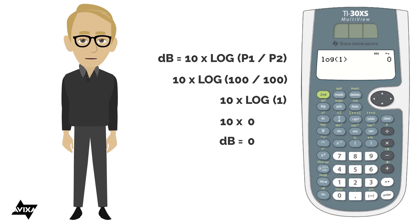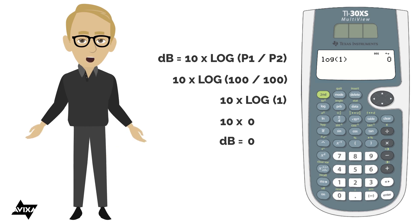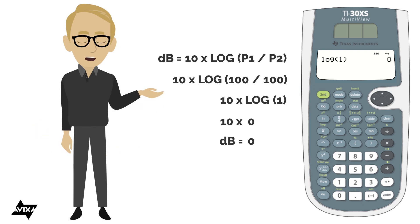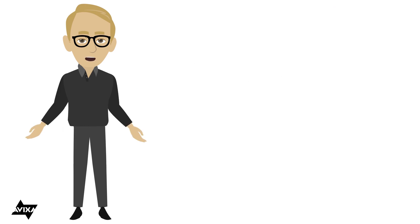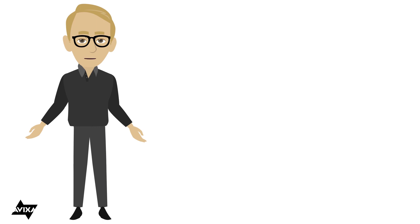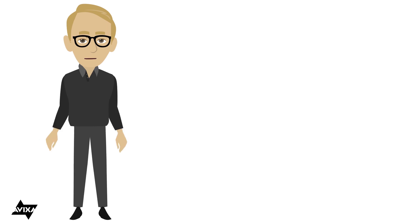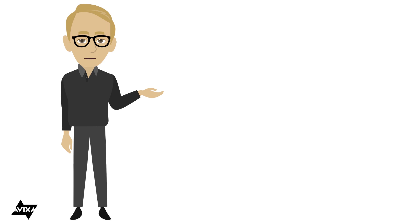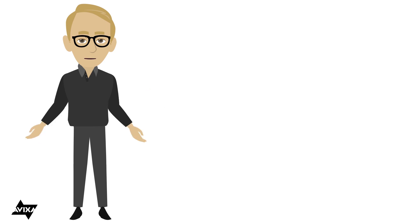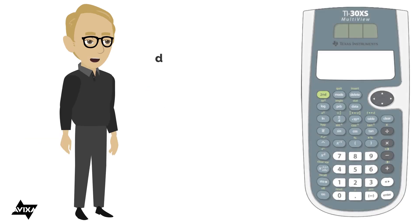And we would expect that — there's no change, same thing in, same thing out. Let's try a different example. Let's say I go from 100 watts to 200 watts — I've doubled the power. If I have an increase, I expect gain, a positive number. So I would put the larger number first. Let's see what we get: the change in decibels, ten times the logarithmic relationship.